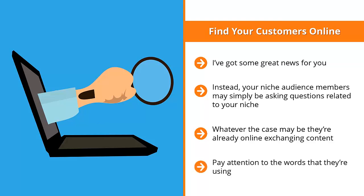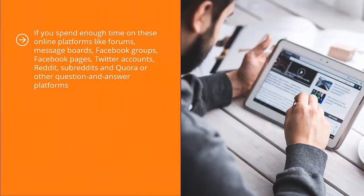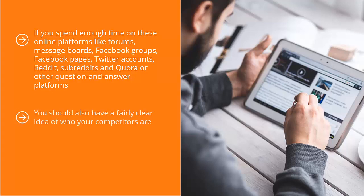Pay attention to the words that they are using and the solutions that they are already talking about. Understand the shortcomings of the solutions people are already aware of. If you spend enough time on online platforms like forums, message boards, Facebook groups, Facebook pages, Twitter accounts, Reddit, subreddits, Quora, or other question-and-answer platforms, you should have a clear understanding of who your audience members are and their expectations.